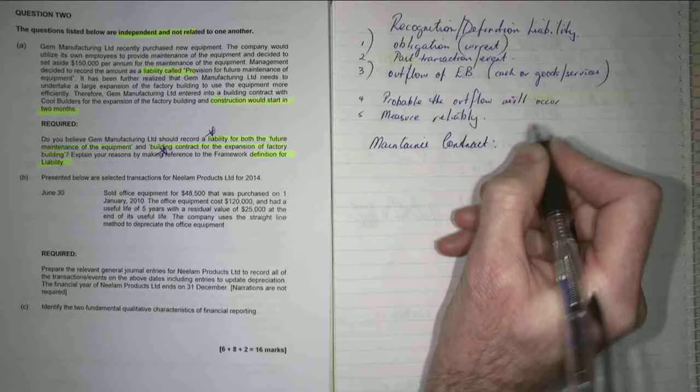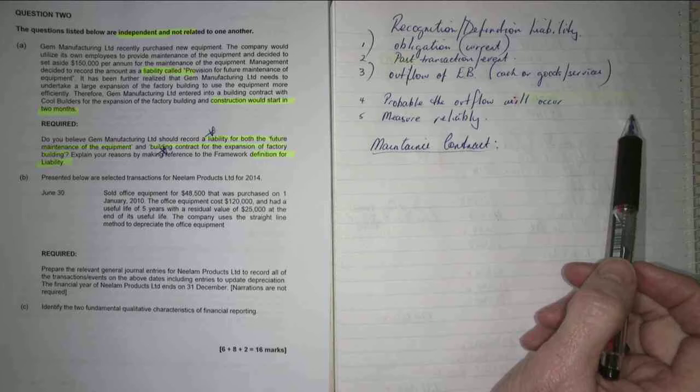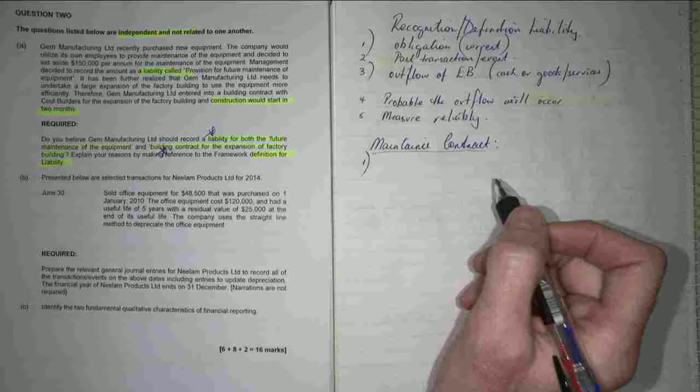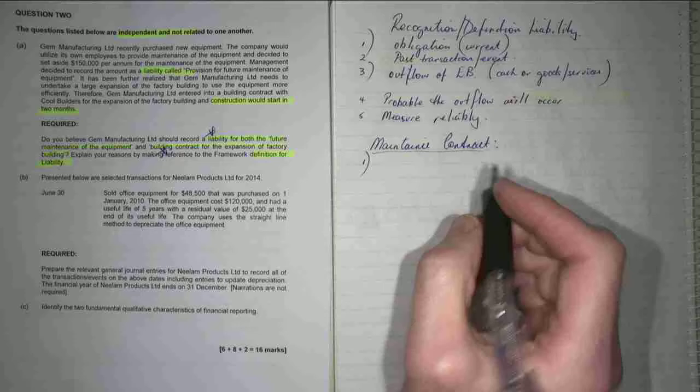So maintenance contract. Maintenance contract. Do we have a current obligation? There's a yes or no answer on this one. Do we have a current obligation? Do we owe someone something right now? No current obligation.